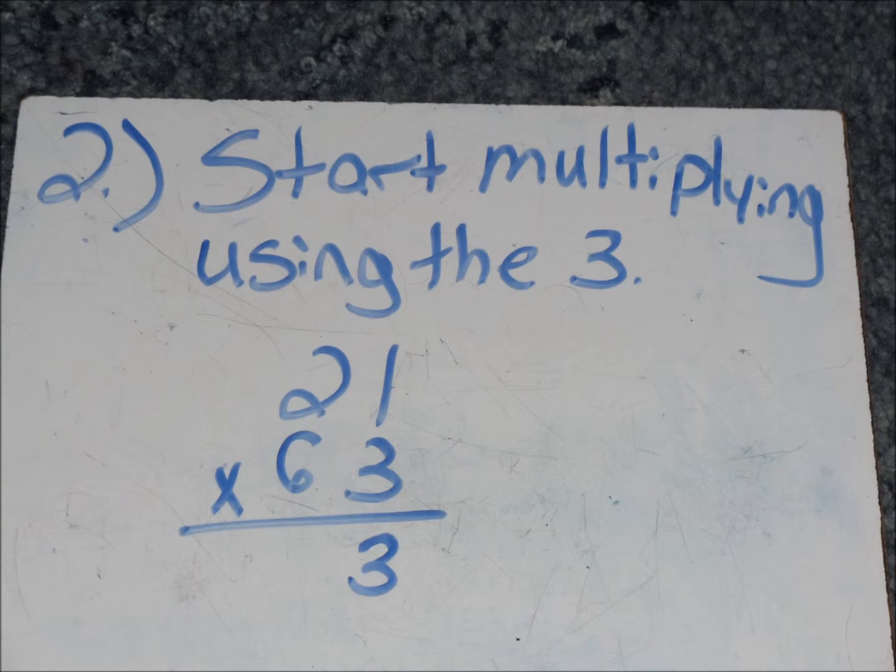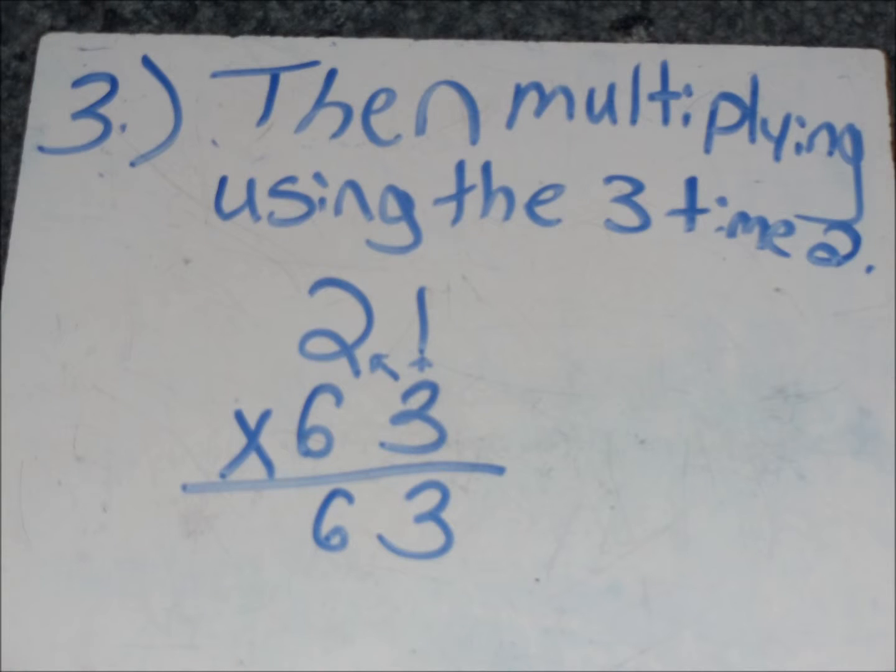Start multiplying using the 3. 21 times 63. So, 1 times 3 is 3. Then multiply 3 times 2. 3 times 2 is 6.